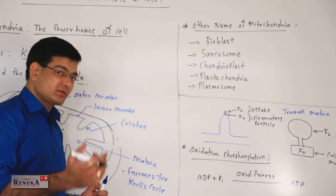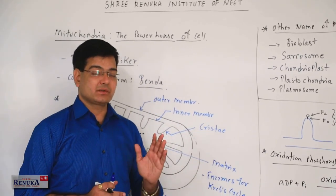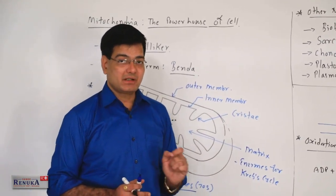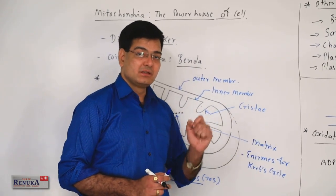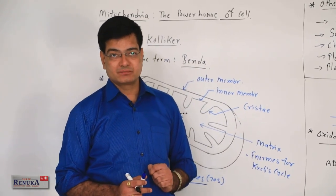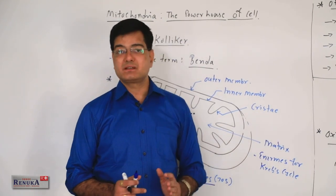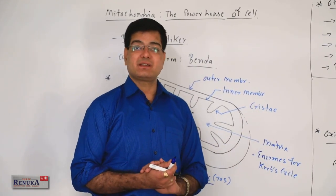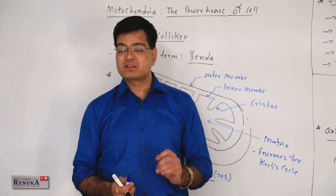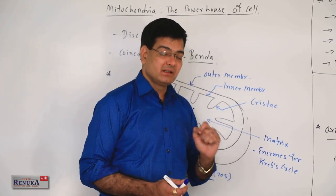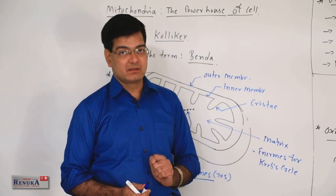The main function of mitochondria is ATP synthesis. But in the case of some muscles, it is also concerned with calcium storage. It also concerns amino acid synthesis and lipid synthesis. In some cases, beta oxidation, specifically in the animal cell, also occurs in the matrix of mitochondria.